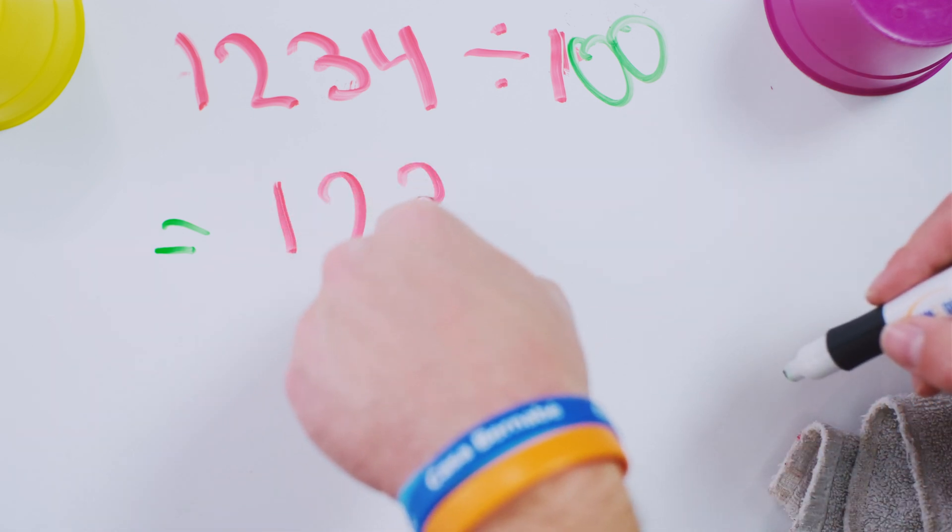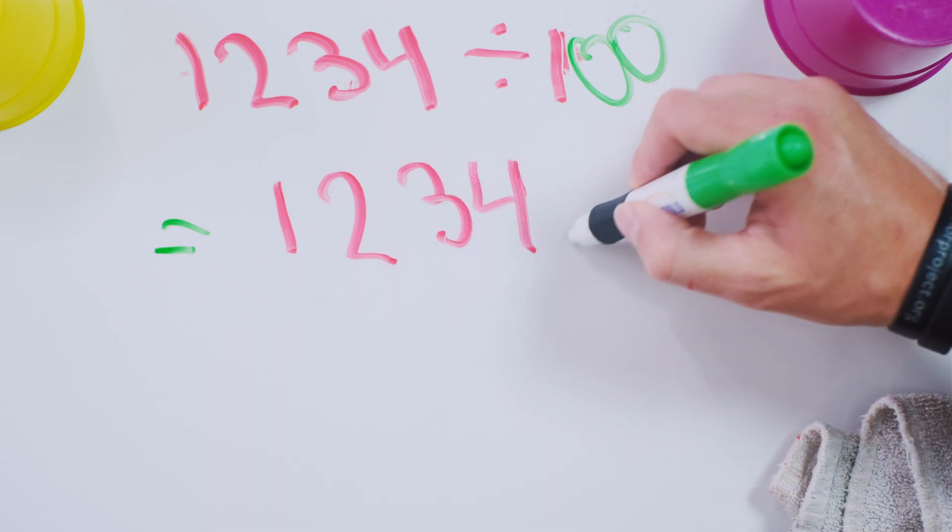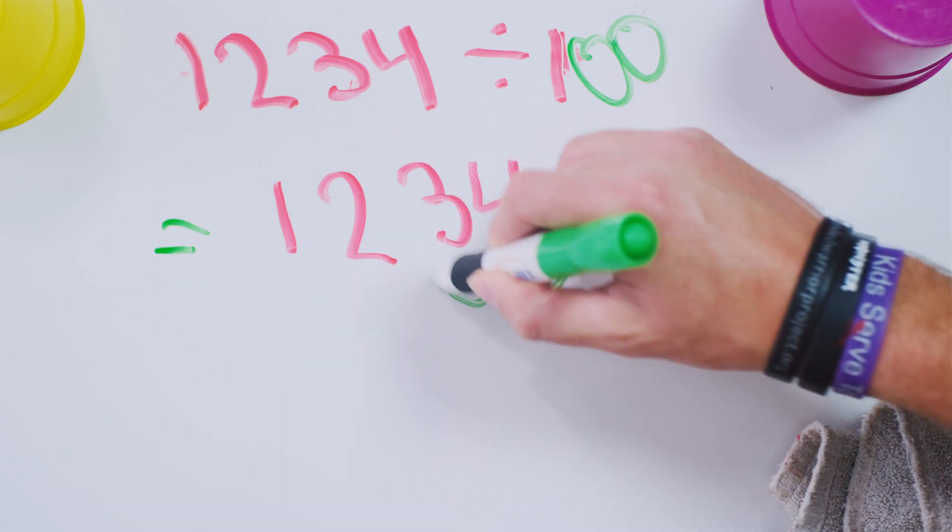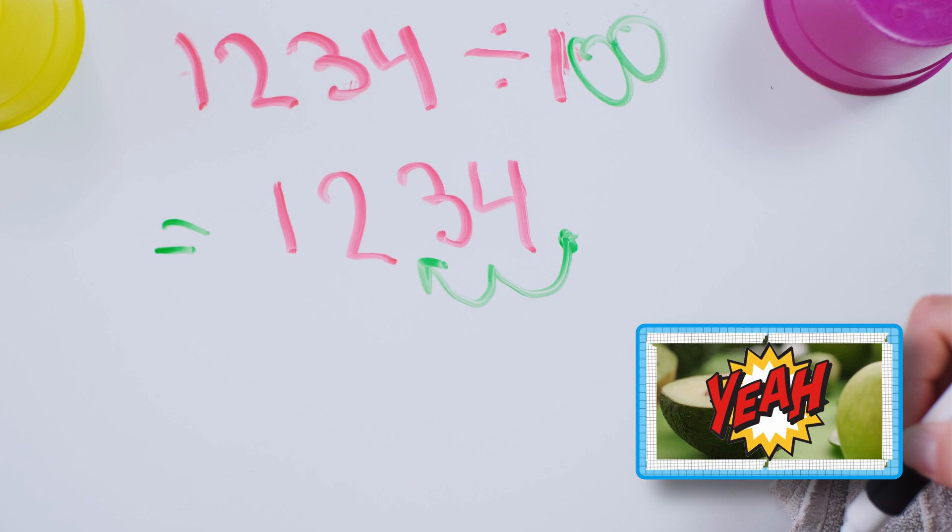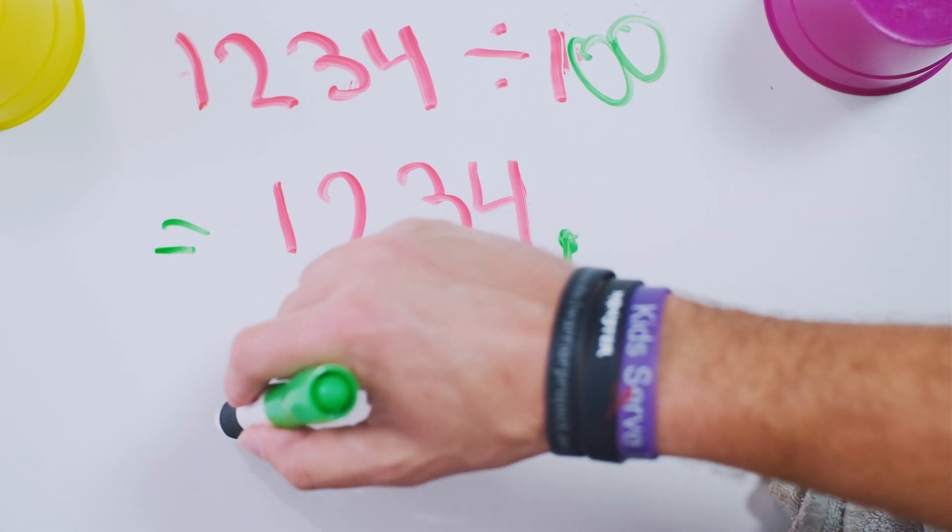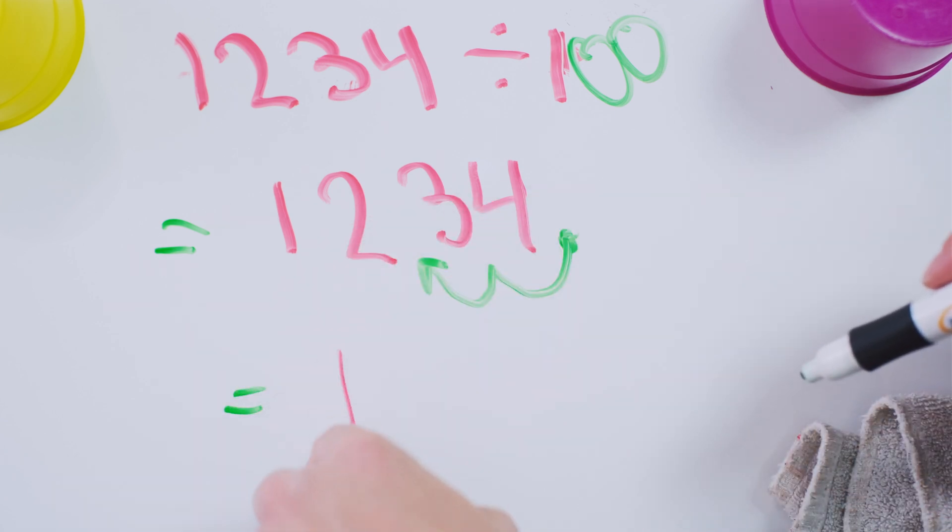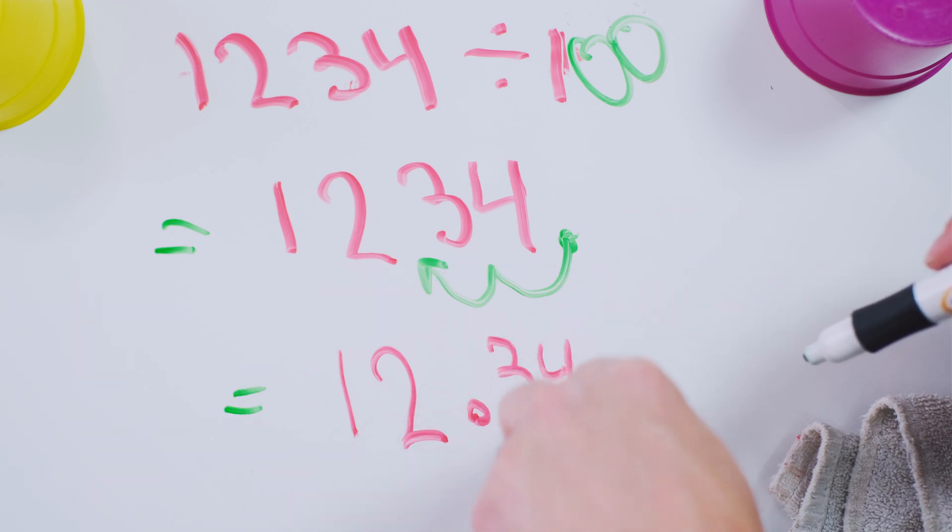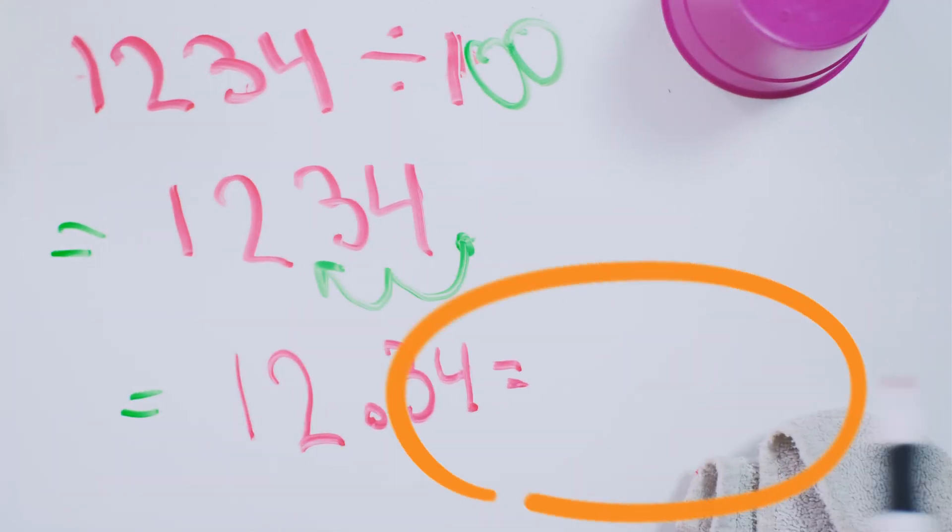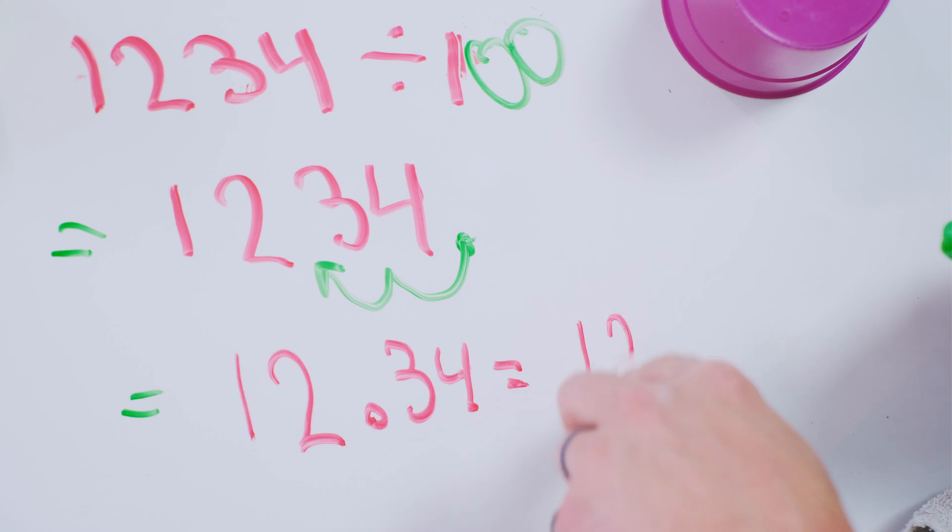So you've got one, two, three, four. Move the decimal place over to the left two spaces. In other words, this is 12.34.